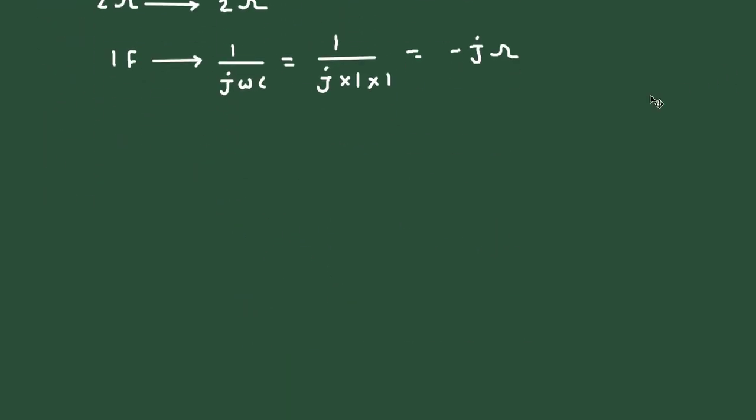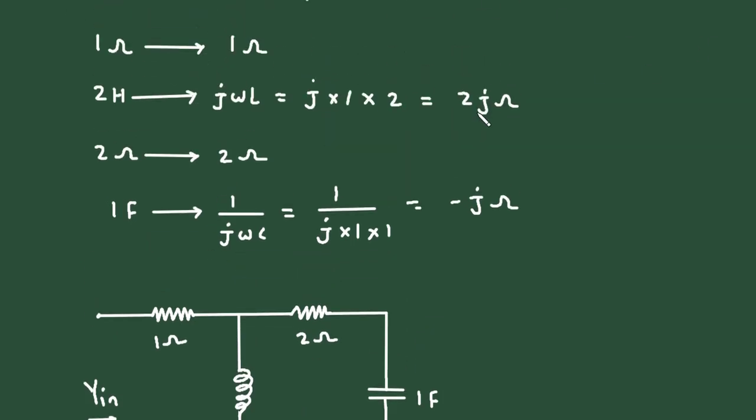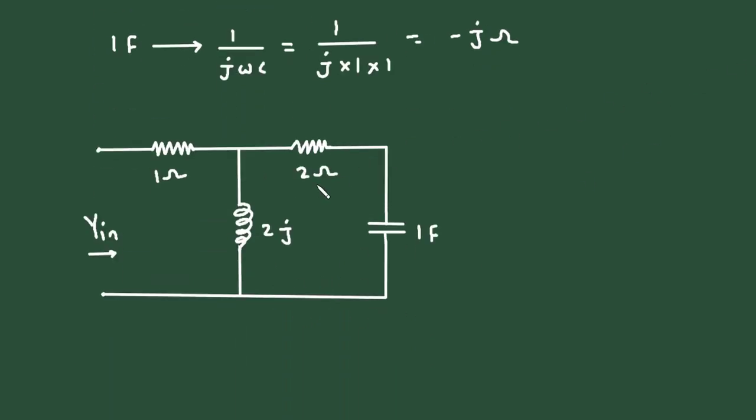Now again, if we redraw the circuit, this resistance value will remain same. These two resistance values remain as is. This 2 henry will be replaced by 2j, and its unit will be ohm. This 1 Farad will be replaced by minus j ohm.